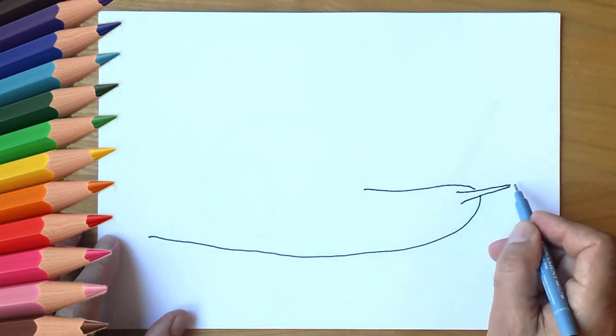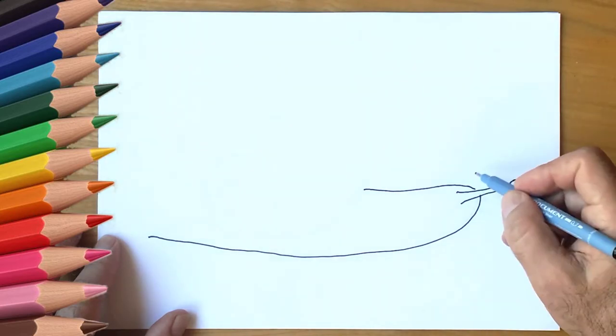First draw the body of a snail. It's long. Now draw the cones of the snail.